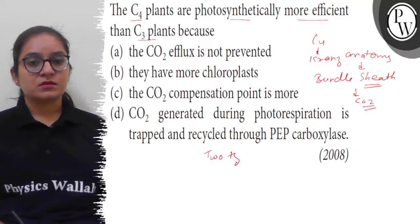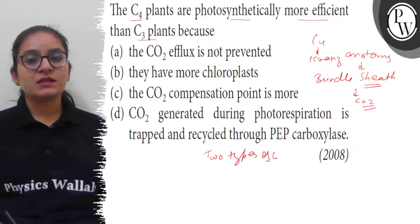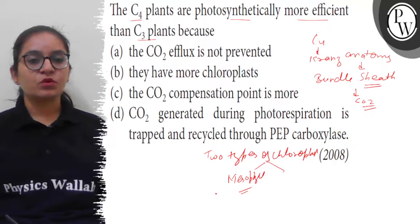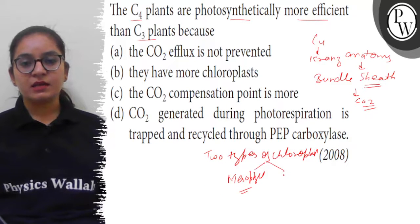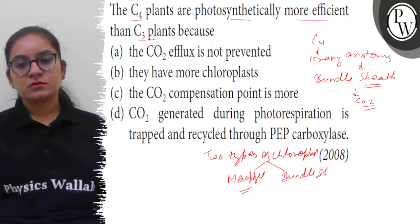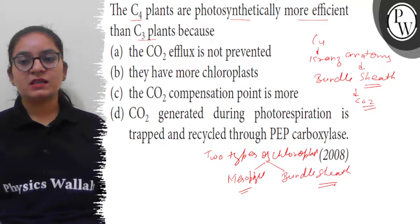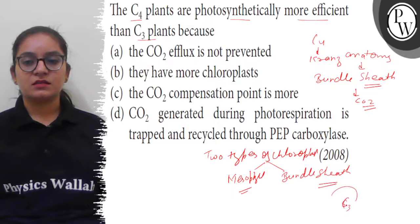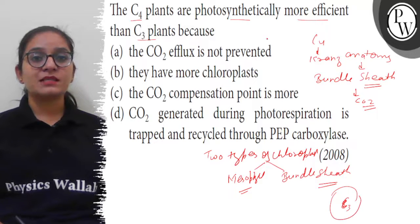There are two types of chloroplasts present in C4 plants — one in the mesophyll cells, which take in atmospheric carbon dioxide, and also in the bundle sheath cells, where chloroplasts are present and they take carbon dioxide and undergo the C3 cycle.